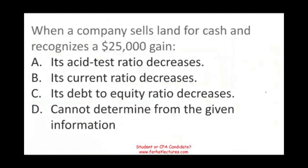Let's take a look at the first question. When a company sells land for cash and recognizes a gain of $25,000, what would happen? We are given four answer choices.